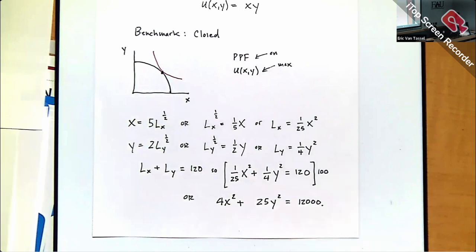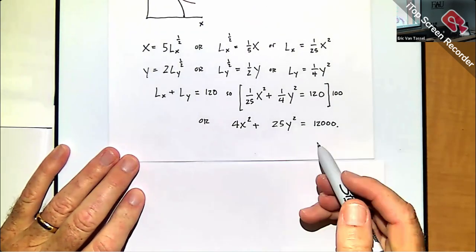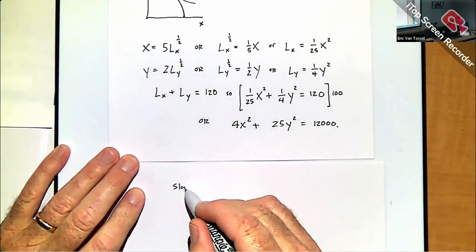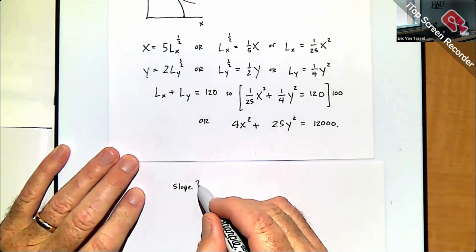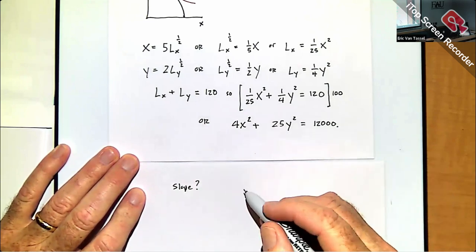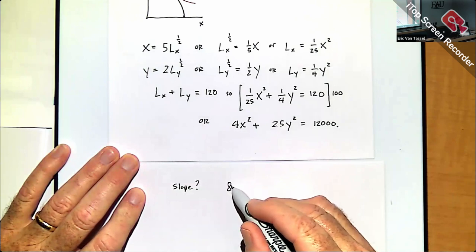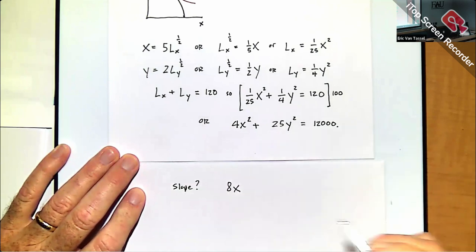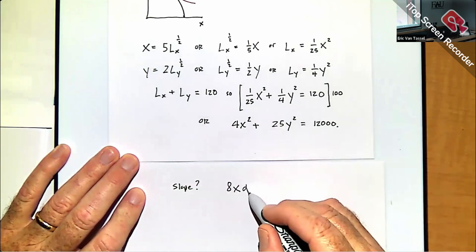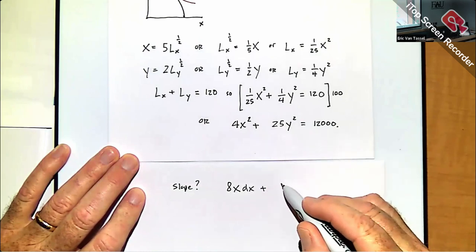The slope of the PPF can be calculated by totally differentiating it. Taking the partial with respect to X gives 8X·dX, and with respect to Y gives 50Y·dY, set equal to zero. Solving for dY/dX gives the slope as −8X/(50Y).